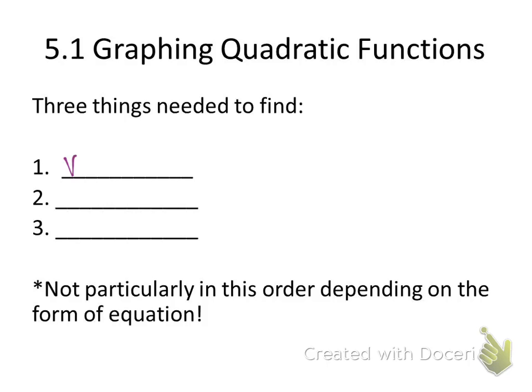One of these items is the vertex. Another item is the axis of symmetry. And the last item is determining shape. Is it pointing up? Are both areas pointing down? Is it skinny? Is it wide? And so on.